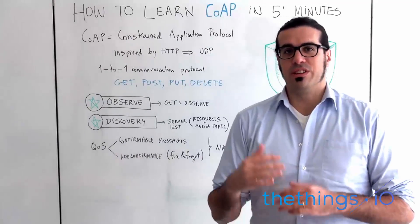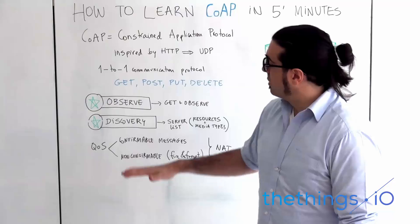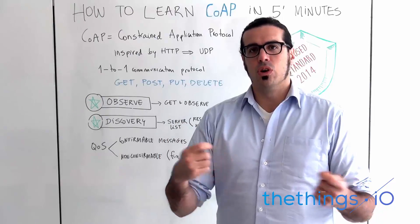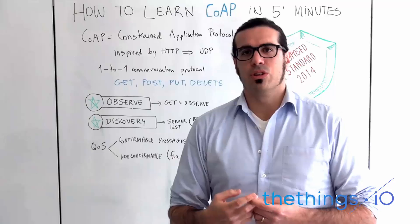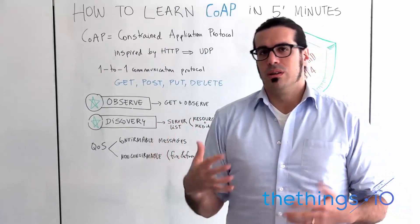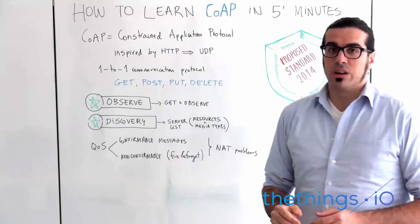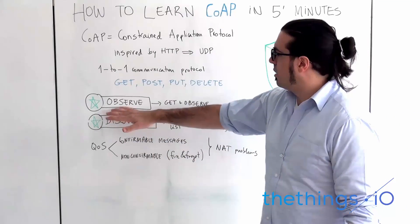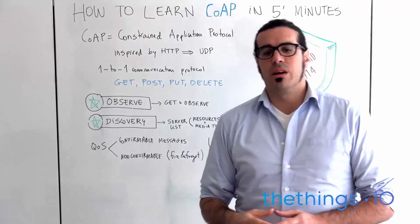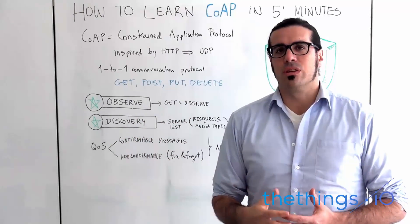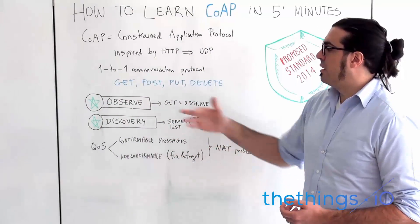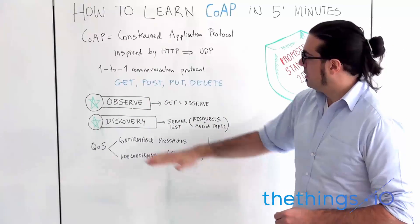CoAP implements some interesting features on top of HTTP that are not implemented in HTTP — for example, observe and discovery features. In HTTP it's complicated to know if there is a new state on a variable, so you need to do polling all the time — asking every minute or every second if there is a new state of a variable. In CoAP, they tried to solve this problem by creating an observe flag. If you send a GET with an observe flag, every time the server or the other device sees a change in the state of that variable, it will push a notification to the original device that defined the observe flag.